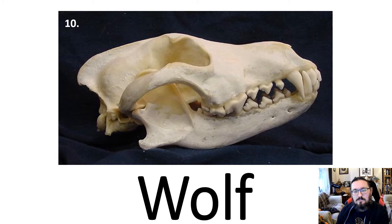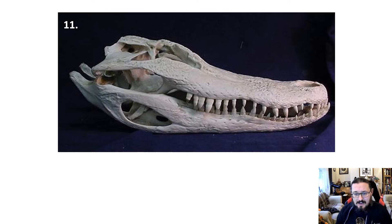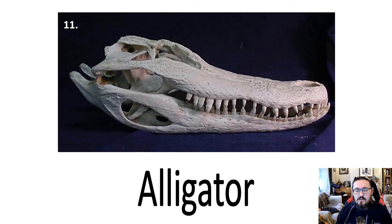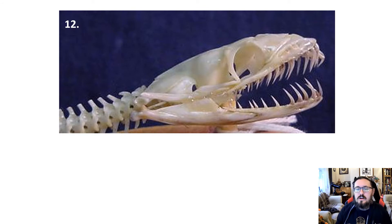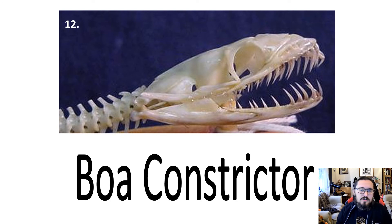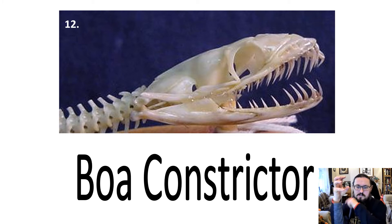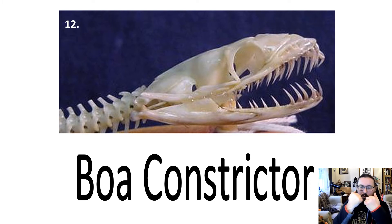This one is a wolf skull — large canines, incisors, and big carnassial slicing teeth for slicing meat. Then fairly obviously an alligator or crocodile. And this one has very sharp backwards-pointing teeth — it's a snake, specifically a boa constrictor. A boa constrictor is non-venomous; it bites, coils around its prey, slowly asphyxiates it, then swallows it. The backward-pointing teeth are to stop the prey from getting back out again.